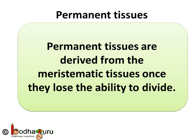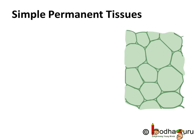Permanent tissues are derived from the meristematic tissues once they lose the ability to divide. The permanent tissues can be of two types — they can be either simple or complex depending on the structure. Let us first understand the different types of simple permanent tissues.